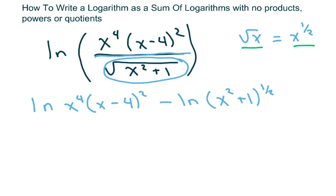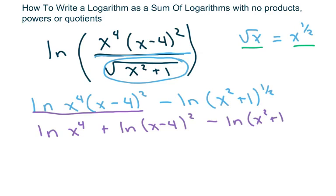Now I'm going to further expand this using my product rule, which is going to be ln of x to the 4th plus ln of x minus 4 squared. And then I'm going to copy this part here, x squared plus 1 to the 1 half.